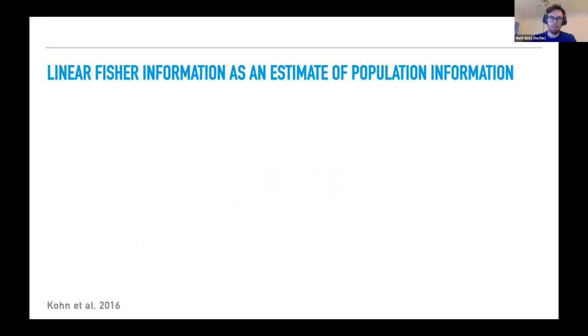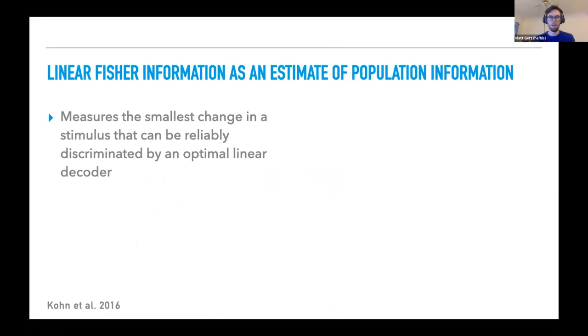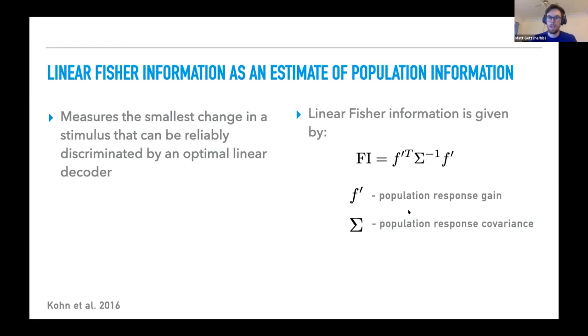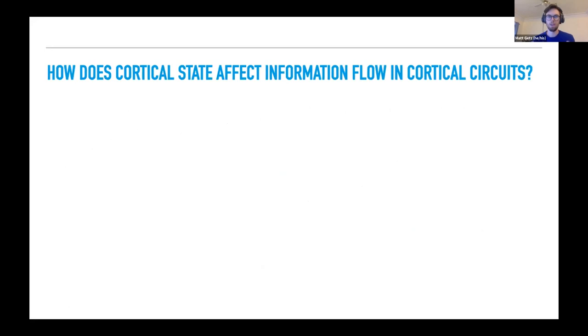In arousal one might see a change in the response gain. With attention, one might see a change in the correlations. This anticipates how we expect neural processing metrics to change. In particular, the metric that we're interested in here is the linear Fisher information, which is a measure of the smallest change in a stimulus that can be reliably discriminated by an optimal linear decoder. You might be familiar with it with this form here, where f prime is the response gain and sigma is the response covariance. While some fancy nonlinear decoder might do a better job, we like this because it also has a clear biological instantiation through synaptic weights.